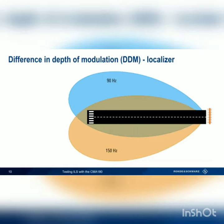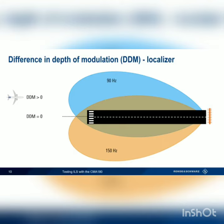An aircraft that's exactly centered on the runway centerline will see the same AM modulation depth on both lobes, and the difference in depth of modulation, or DDM, will be zero. Moving to the left of the centerline — more into the 90 Hz lobe — causes DDM to increase, or become more positive. Moving to the right of the centerline, or more into the 150 Hz lobe, causes DDM to decrease, or become more negative. These changes in DDM are what cause the needle to move right and left on a localizer dial.